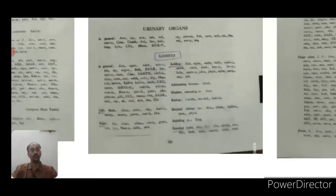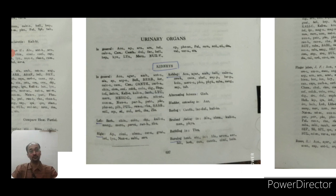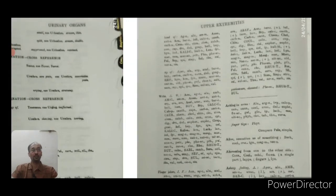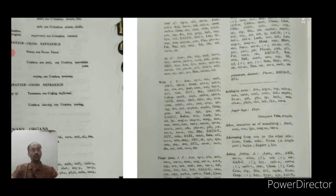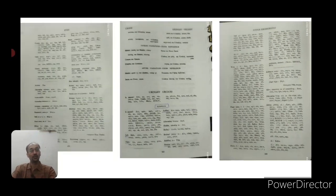Another example: in the chapter on urinary organs, we have subsections of kidneys — kidneys in general, left, right — then a horizontal line, and in the next column the rubric 'aching.' Similarly, in the chapter on upper extremities, you will find a horizontal line and then the rubric 'aching in arms' starting. The location rubrics start with 'in general,' then parts, extensions, etc.